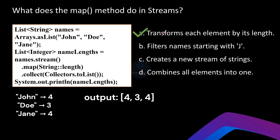Now let's understand the choices. Choice one — 'transforms each element by its length' — is the correct answer because the `map` method applies the `length` function, transforming each name into its respective length. Choice two — 'filters names starting with J' — is incorrect because `map` doesn't filter elements; filtering is done using the `filter` method. Choice three — 'creates a stream of streams' — is incorrect; `map` creates a stream of integers. Choice four — 'combines all elements into one' — would be done using `reduce`. So option A is correct.